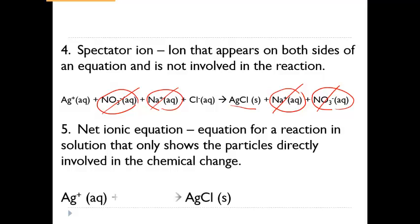Since we've gotten rid of the sodiums and the nitrates, we're left with Ag⁺¹ and Cl⁻¹, then the arrow, and then our silver chloride solid — the precipitate. That's how you break everything down into ions, cross out the spectator ions, and write the net ionic equation with only the essentials.